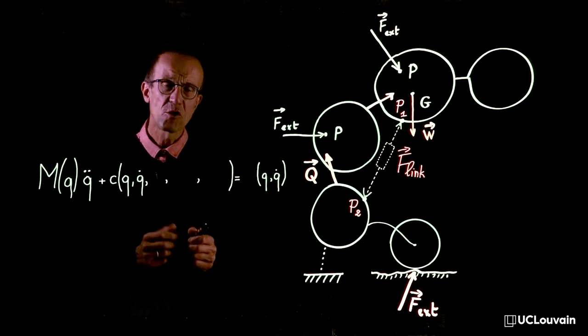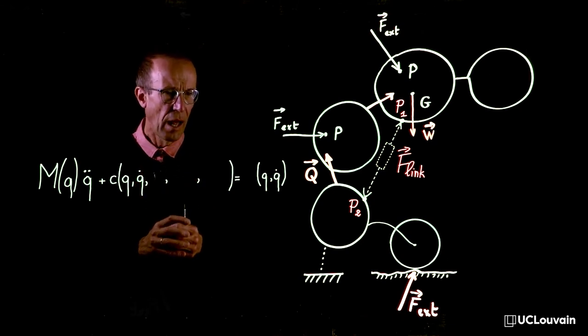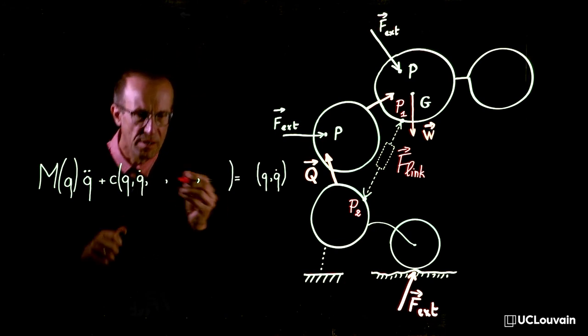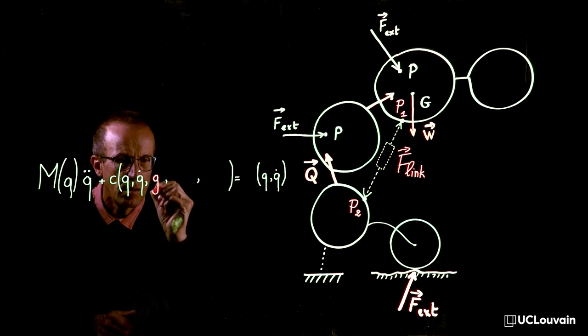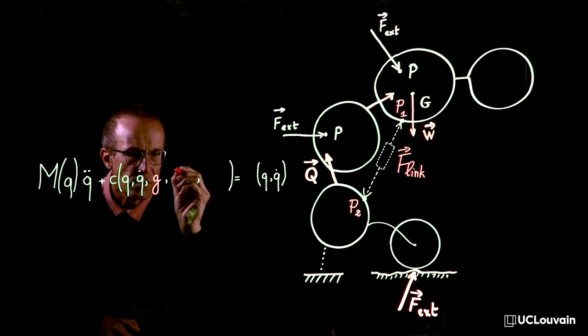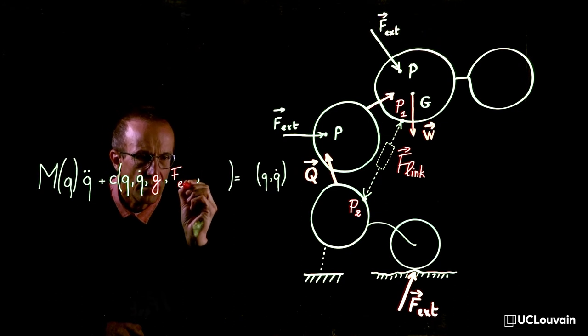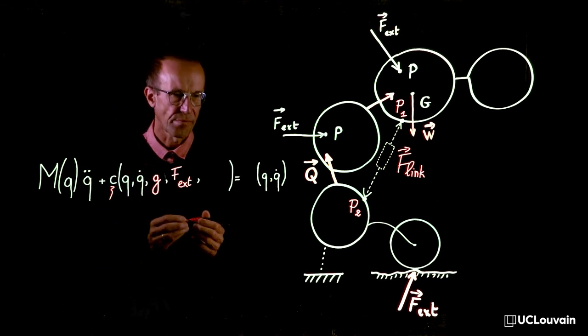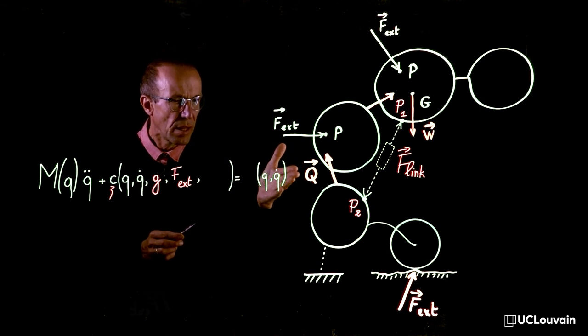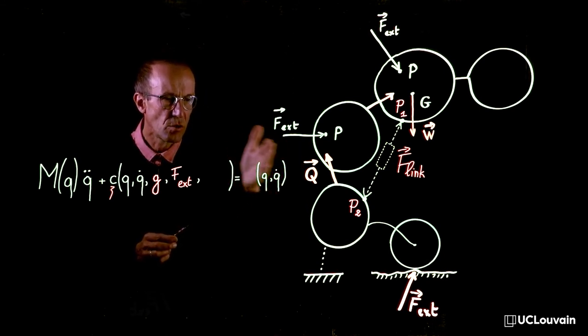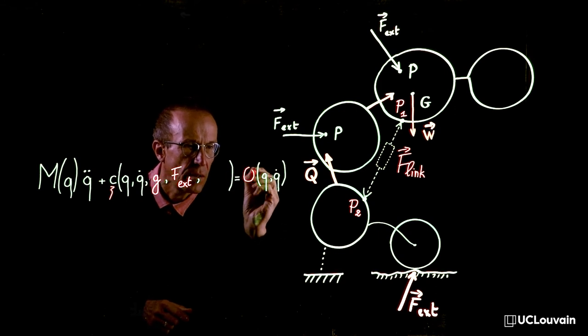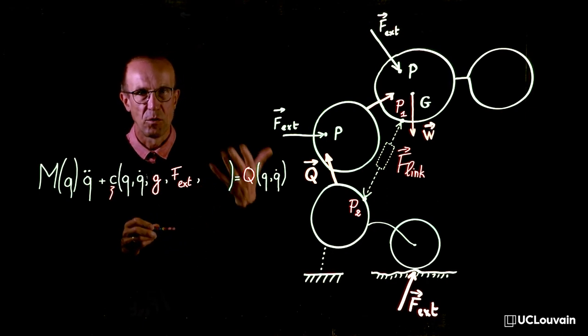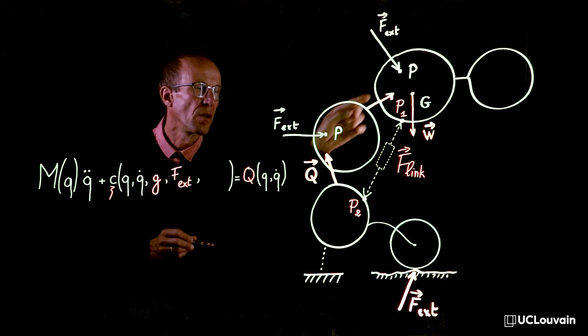To conclude, let us show where the above mentioned forces appear in the matrix form of the equations of motion. The gravity and the environment forces are part of the vector c. The vector q on the right side of the equations of motion will represent the forces and torques within the joints of the system.